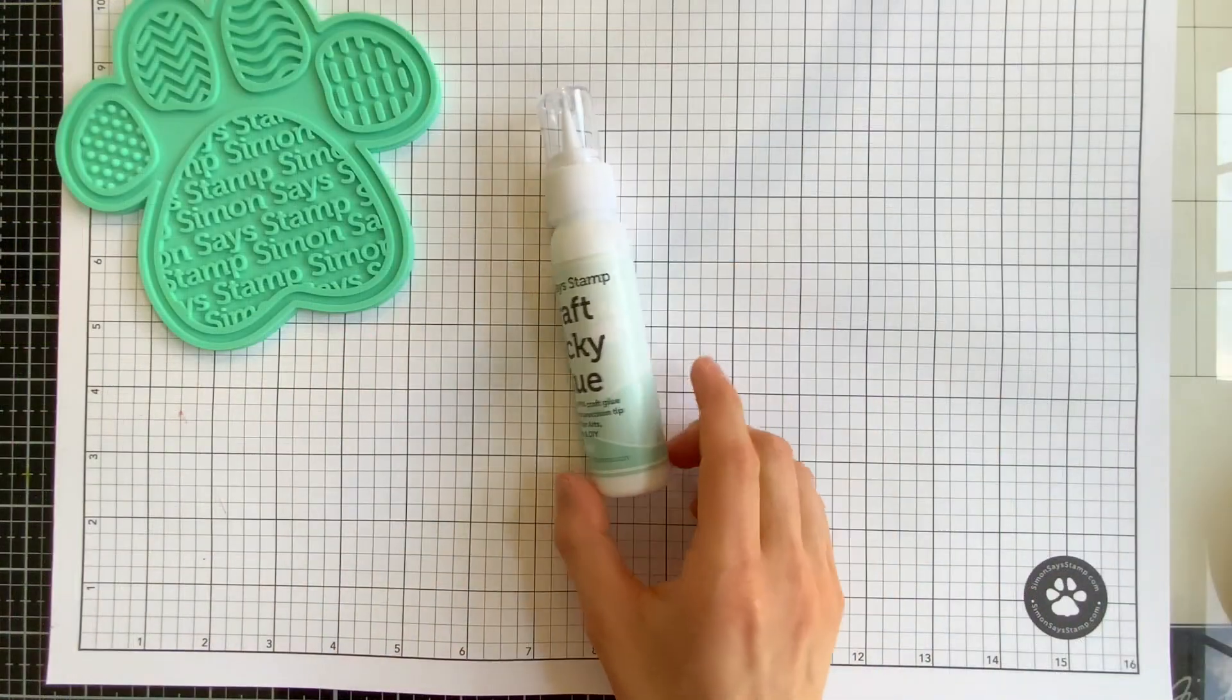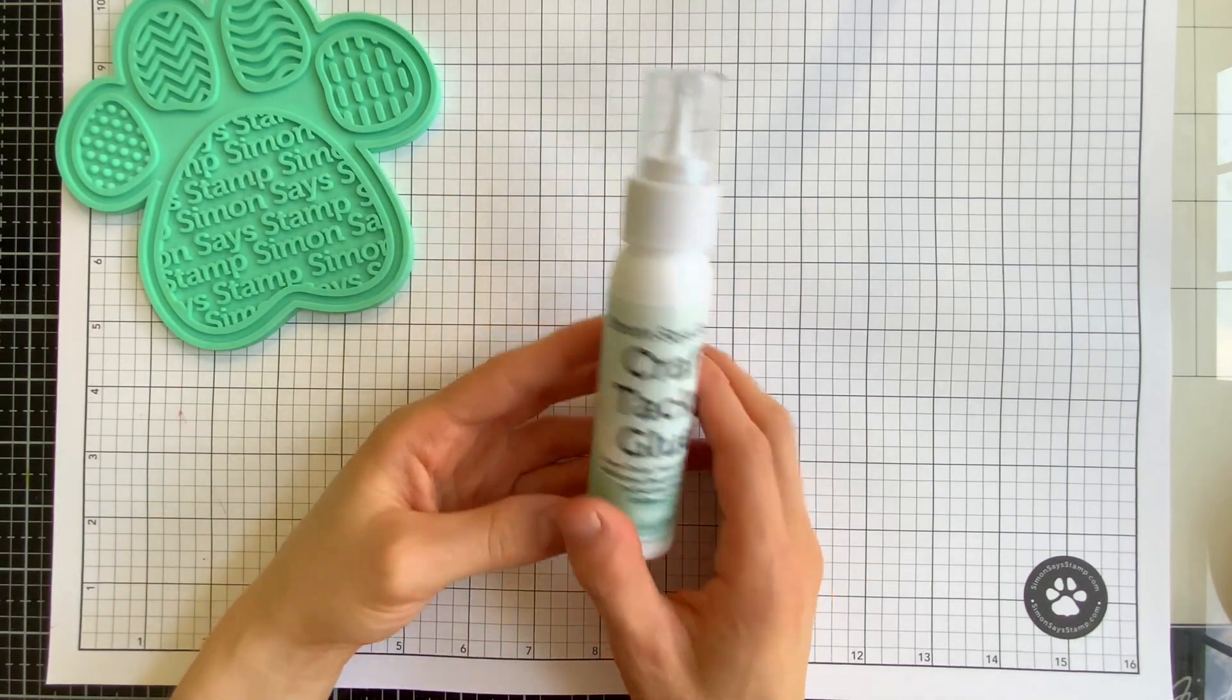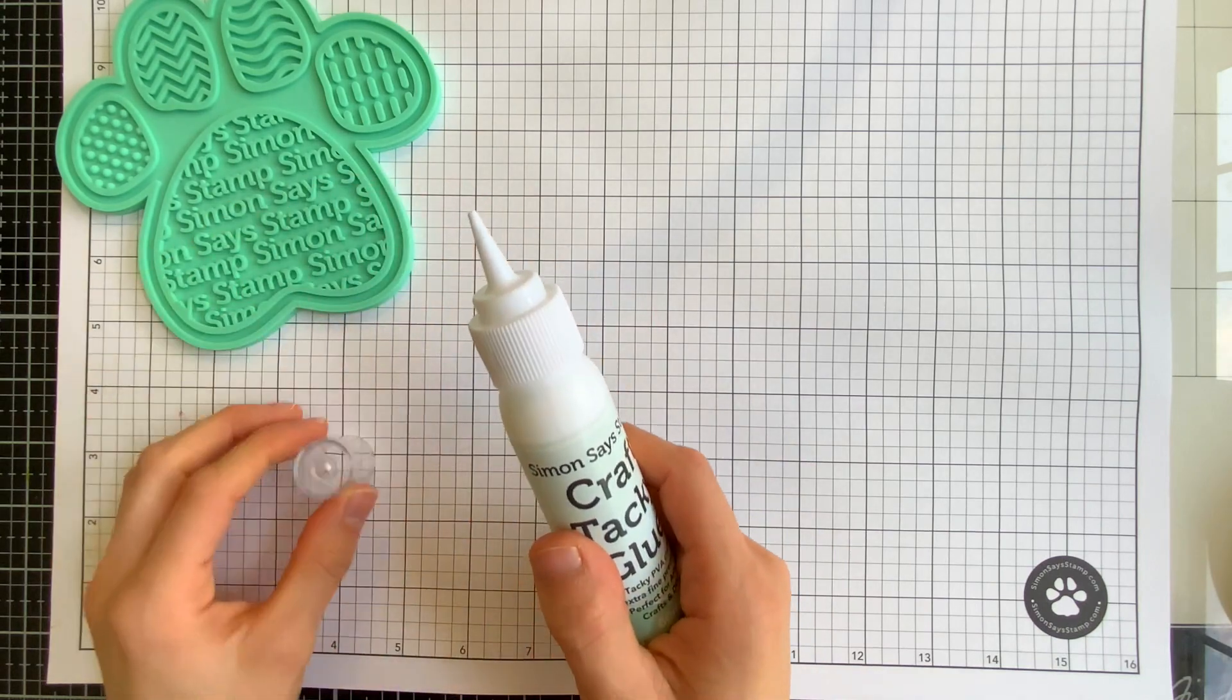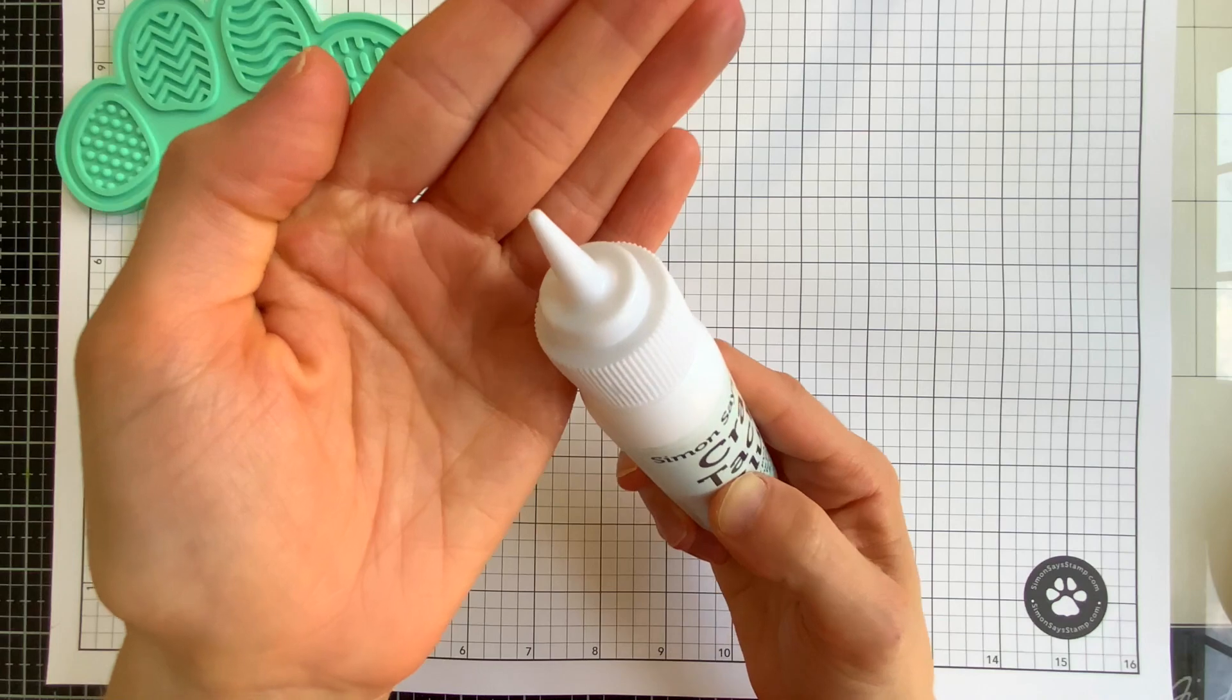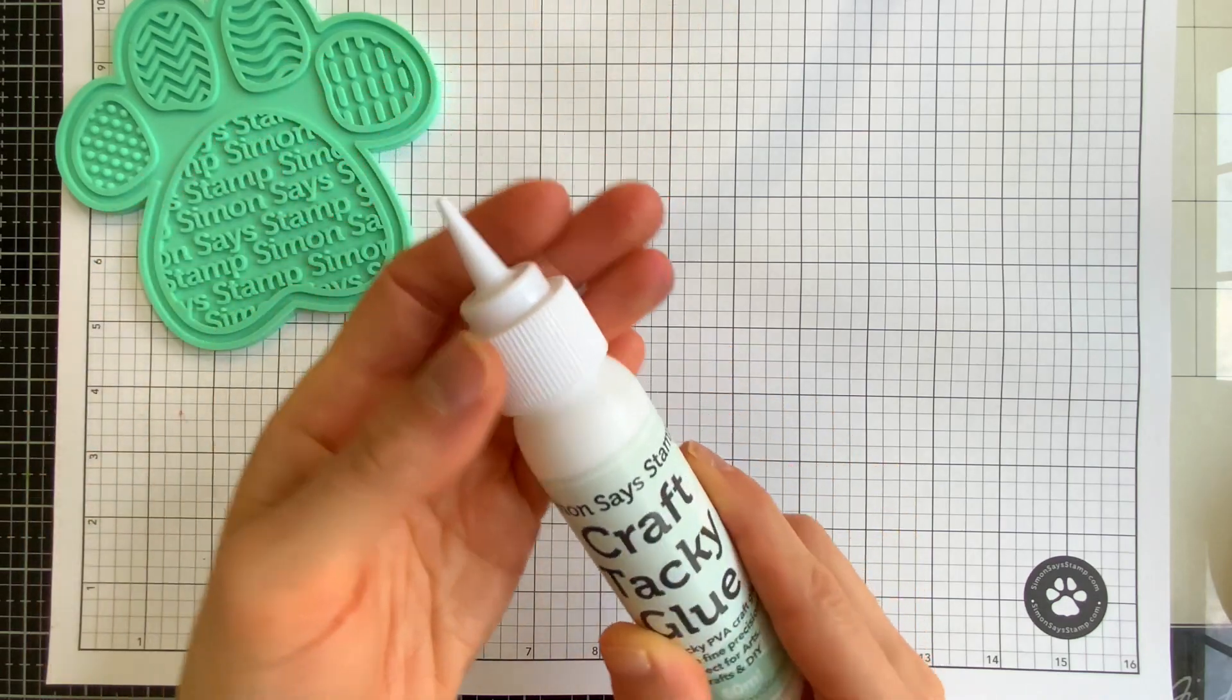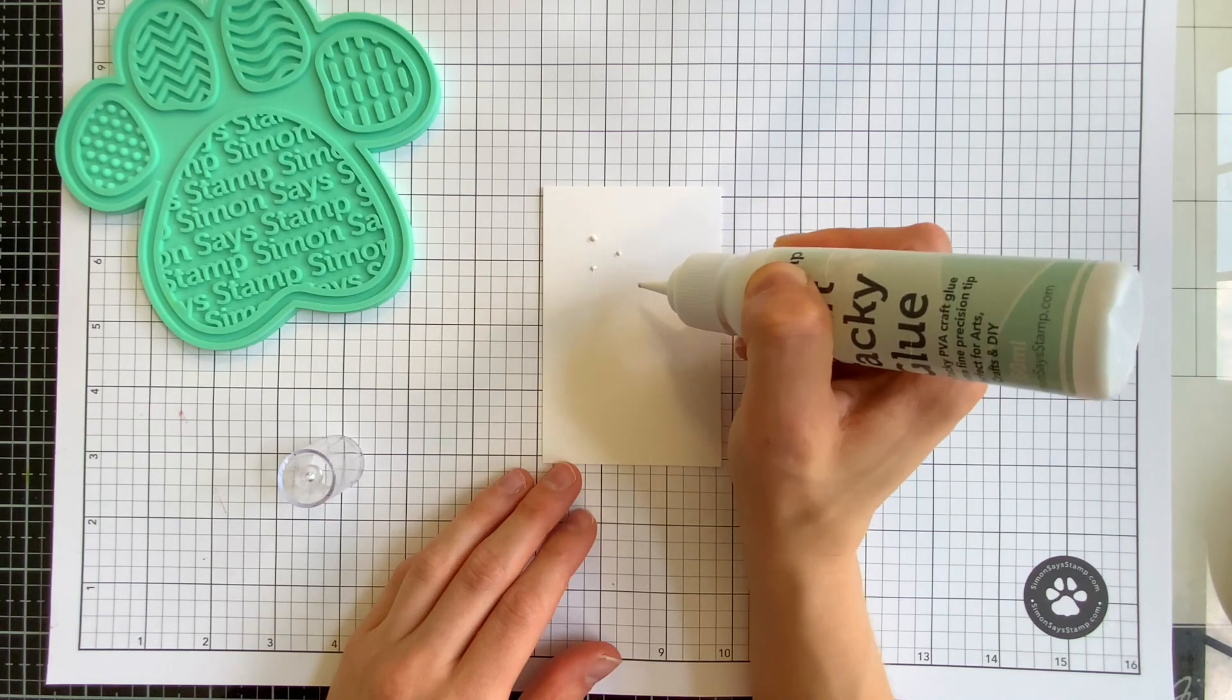Another adhesive in our Simon family of products is the Craft Tacky Glue. This adhesive is a PVA, which is a non-toxic adhesive that has a lot of great benefits. It's strong on a wide variety of surfaces from all papers to even wood. It's easy to clean up and it's safe for even kids to use.